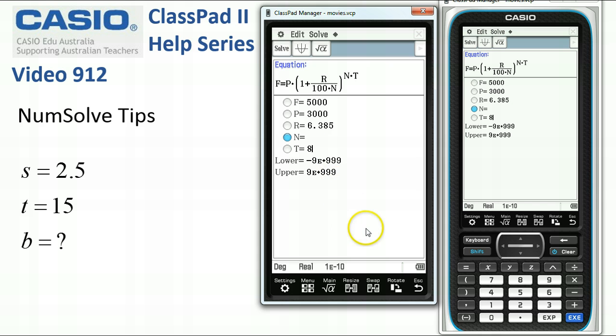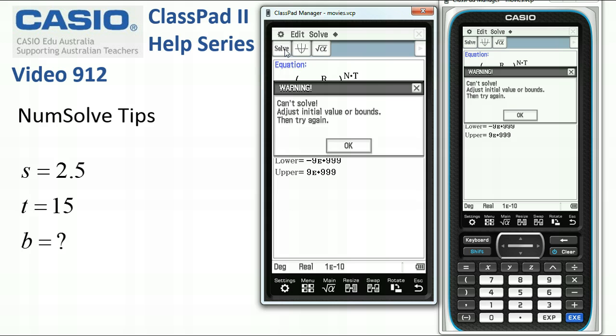Now, if I tap solve, let's see what happens. ClassPad says it can't solve this equation. Now, I know there is a solution, although it's quite a large number, but it was just one that makes ClassPad sort of give us this message. Adjust initial value or bands and try again.